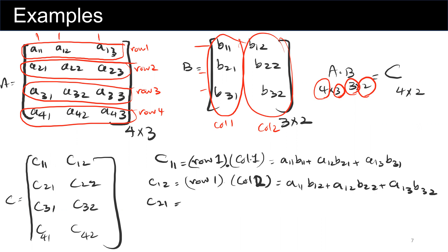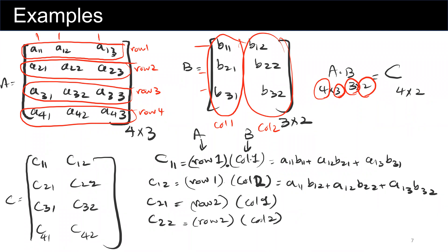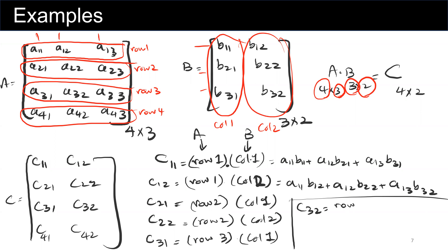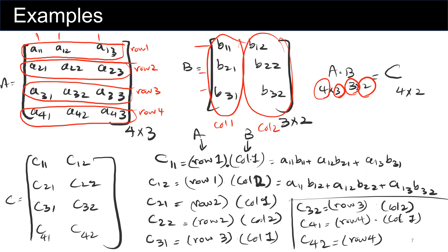For c21, we use row 2 of A and column 1 of B. For c22, row 2 of A and column 2 of B. For c31, row 3 of A and column 1 of B. For c32, row 3 of A and column 2 of B. For c41, row 4 of A and column 1 of B. Finally, c42 uses row 4 of A and column 2 of B. This intuitively gives all elements for any matrix multiplication.